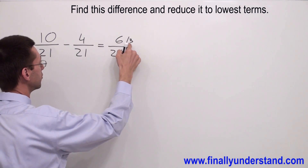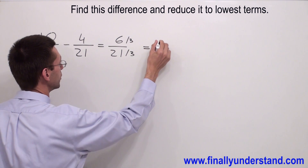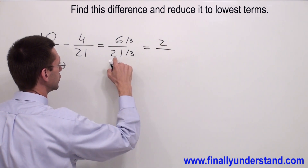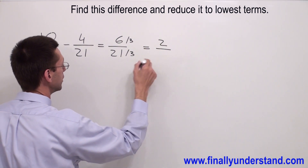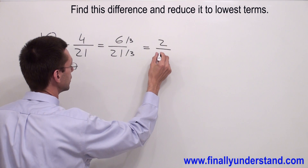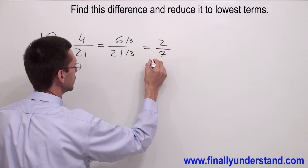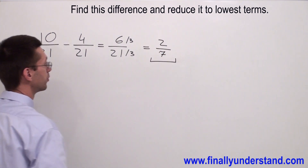6 divided by 3 gives me 2, and 21 divided by 3 is 7. So this is the solution to my problem.